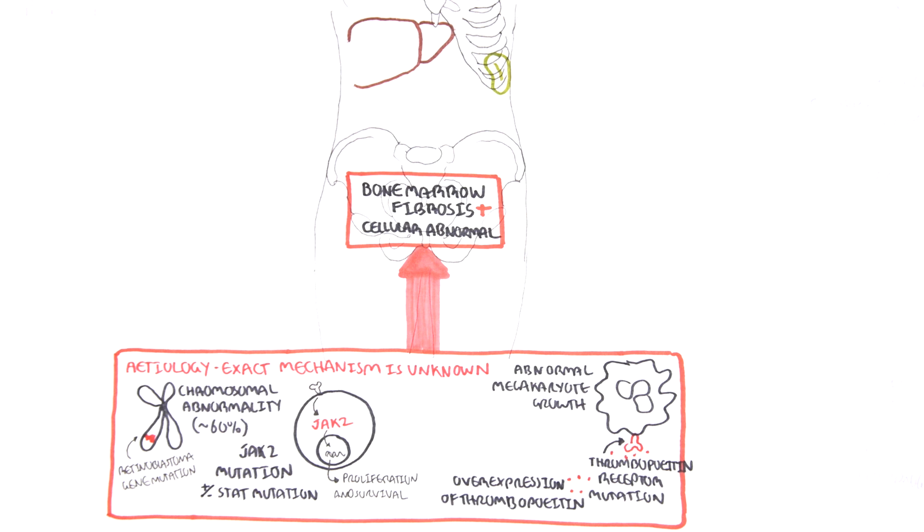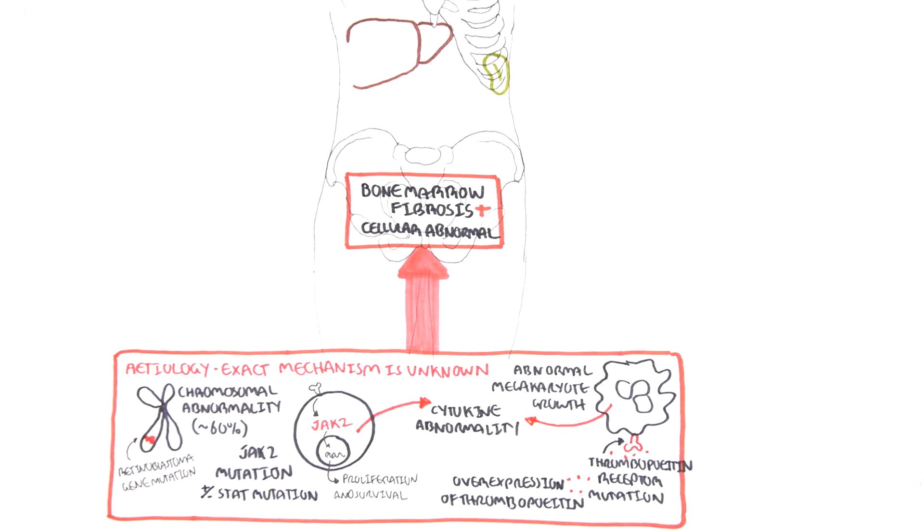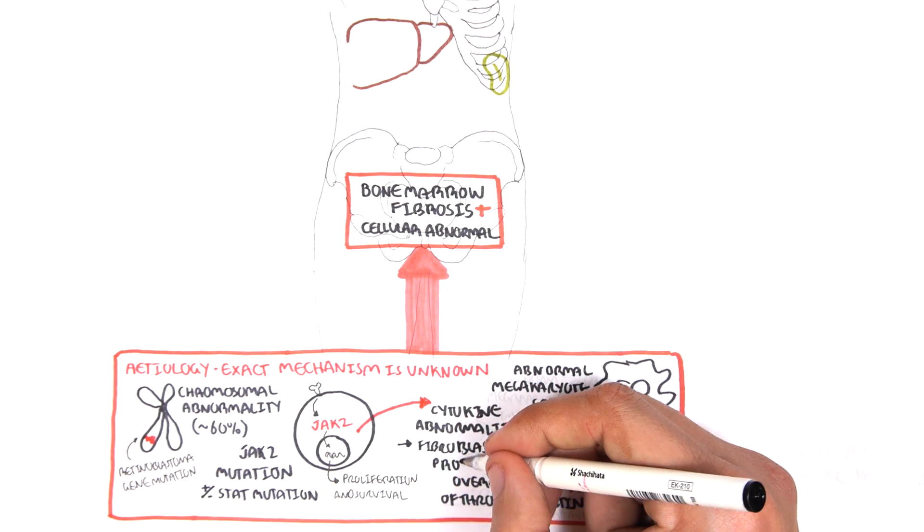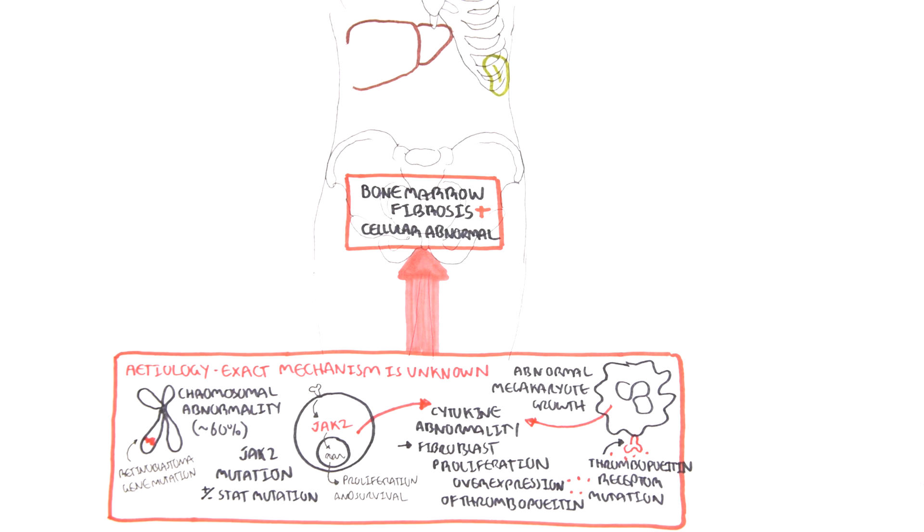Finally, these abnormal megakaryocytes and the other cells within the bone marrow with the JAK2 mutation can begin releasing cytokines abnormally. And this is unnecessary. These cytokines can include growth factors, which recruit things such as fibroblasts and stimulate fibroblasts to proliferate and thus cause deposition or formation of collagen, turning the area into a fibrotic tissue, causing the hallmarks of primary myelofibrosis, that is, bone marrow fibrosis.